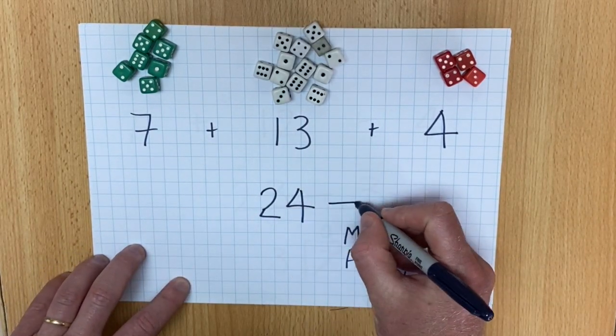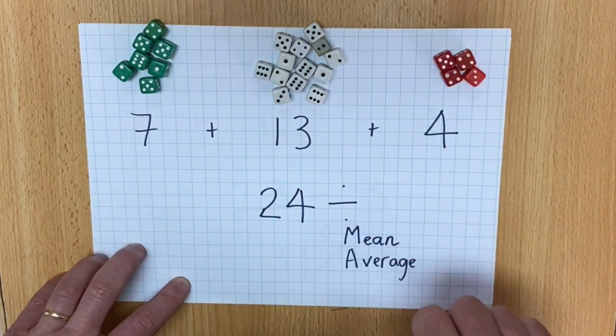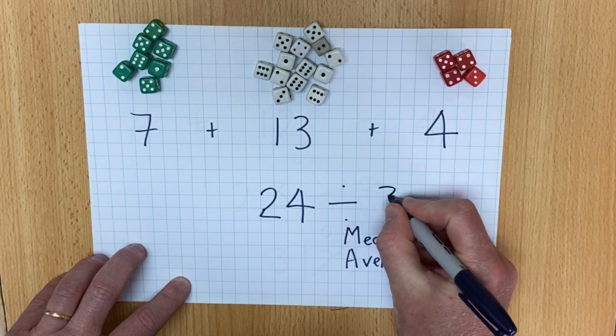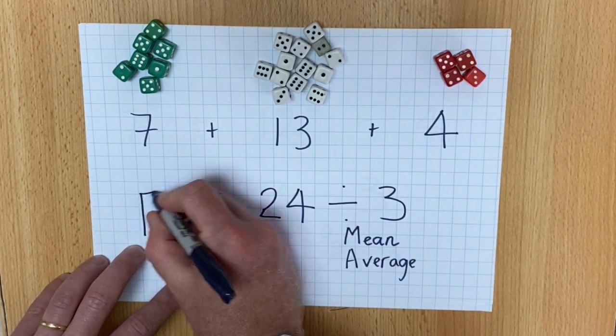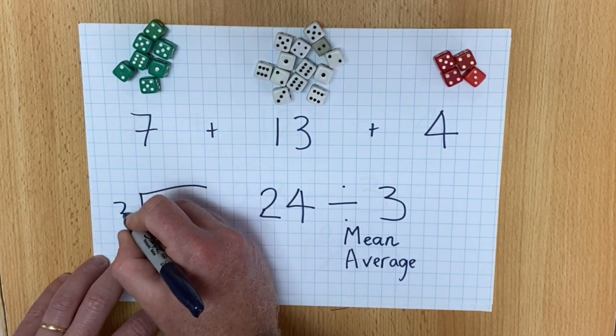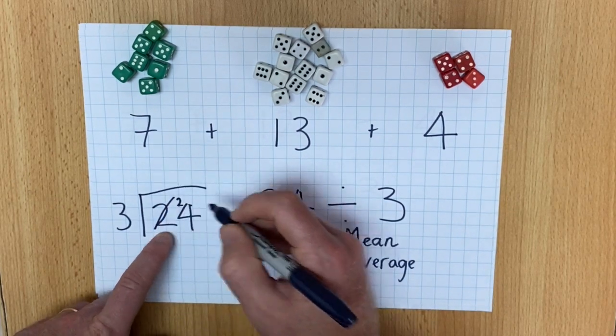Now I need to divide it by the number of groups. So there's one, two, three groups. And if I use short division, I can divide twenty-four by three. How many threes in two? There are none. So I need to carry that.